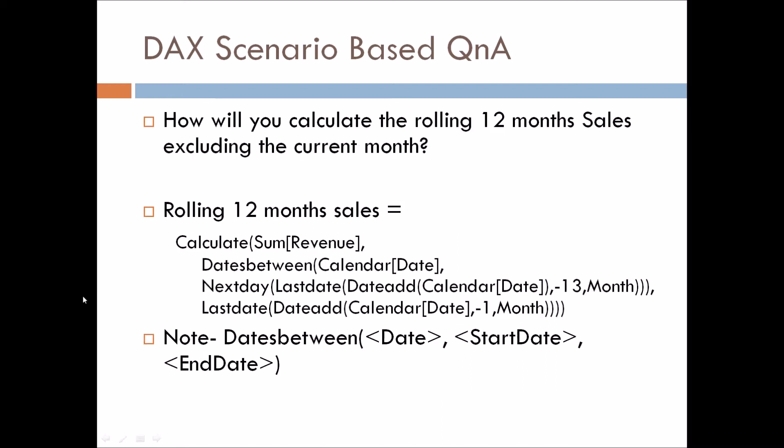Let's move to the second question: how will you calculate the rolling 12-month sales excluding the current month? Whenever you have this type of question where you have a range of dates — that is a start date and an end date — for all those questions, you have to use the DATESBETWEEN function.